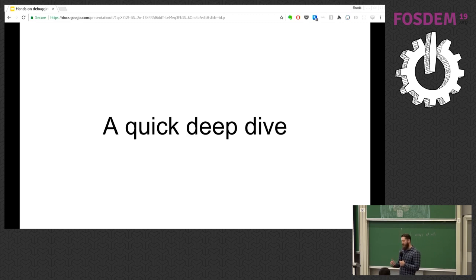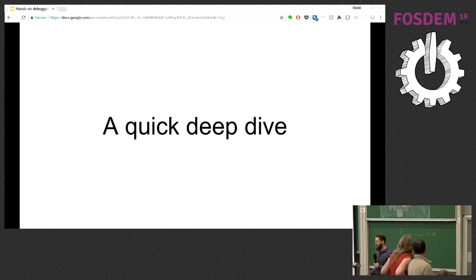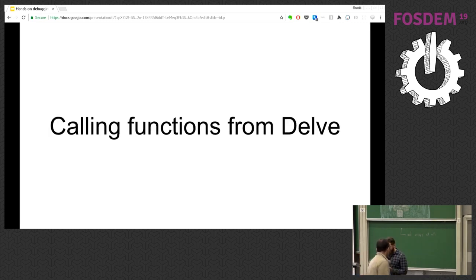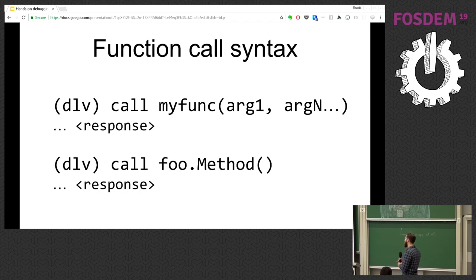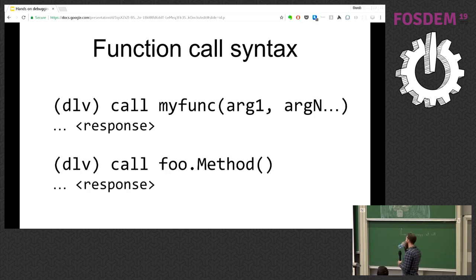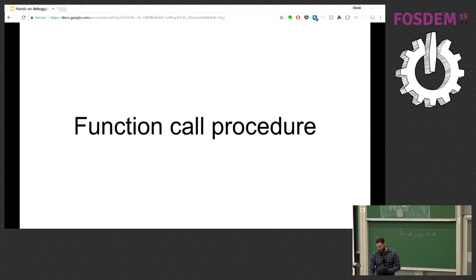This was a really interesting feature and it took a lot of coordination. I wanted to dig into it and show everybody how it works. The syntax for calling a function is just this — you call whatever function you want and can pass arguments, with some limitations I'll get into. You can also call methods, with limitations as well — in reality the method receiver is being passed as an argument, so the same argument limitations apply. In order for Delve to make a function call in the target program, there's a procedure that must be followed.